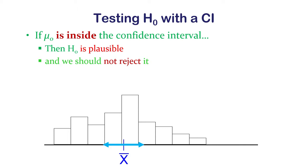If mu sub zero falls inside that confidence interval, then we do not reject the null hypothesis, because the mean that the null hypothesis says the true population should have is believable as the true population mean for us.